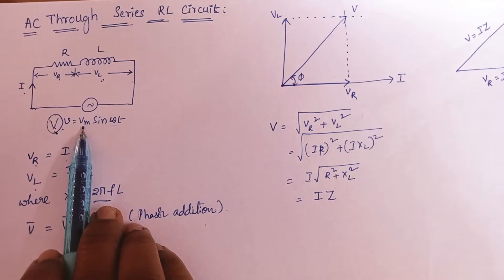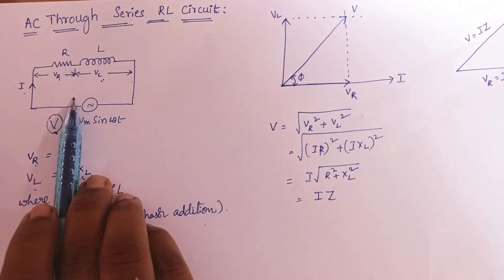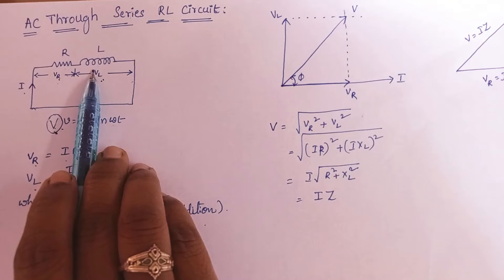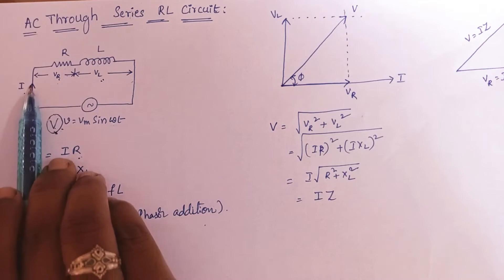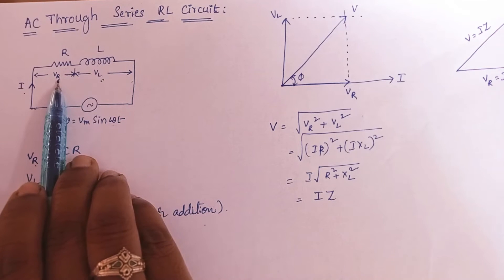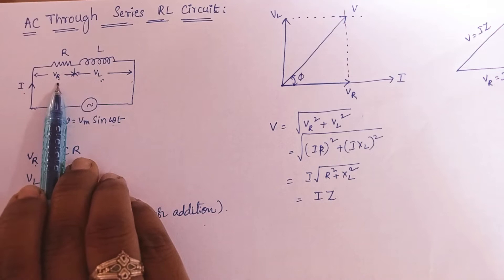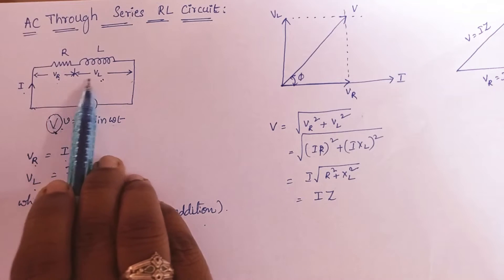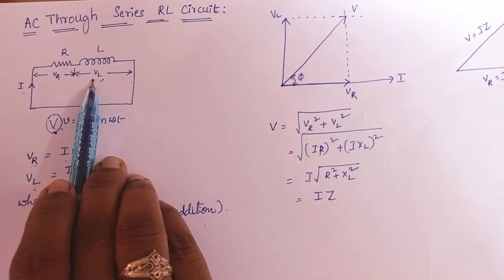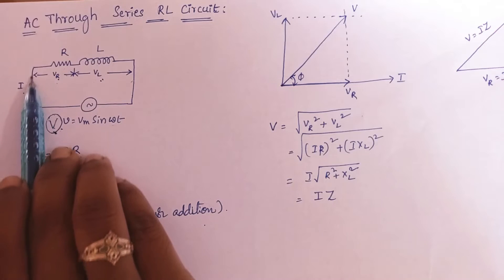So now let us discuss this concept. Because they are connected in series, the current will be common for both elements. But voltages, voltage drops Vr and Vl, Vr is the voltage drop across the resistor, Vl is the voltage drop across the inductor, they are going to be different. But the common element for these two is the current.